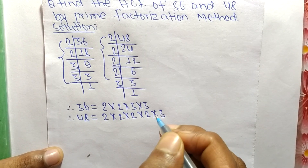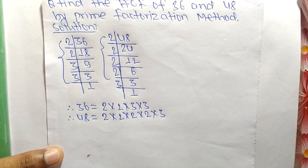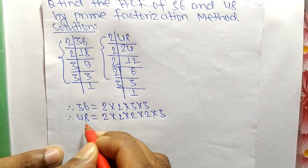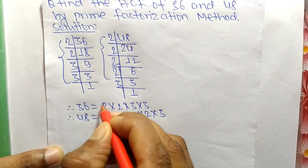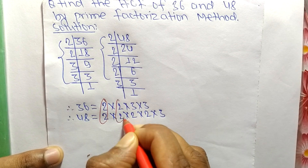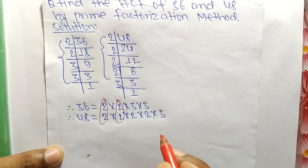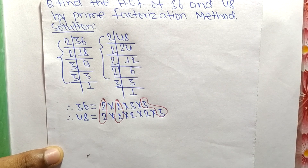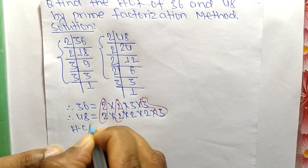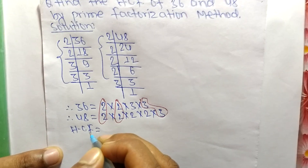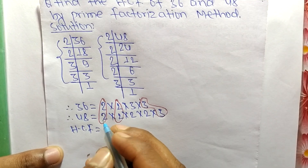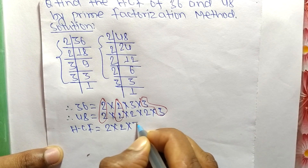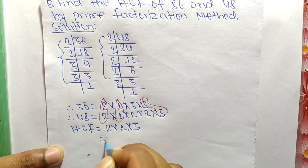Now we have to find out the common factors in the prime factors of 36 and 48. The common factors here are 2, 2, and 3. HCF means Highest Common Factor, which is the product of all common factors, so the common factors are 2 times 2 times 3.